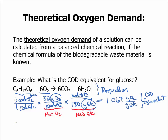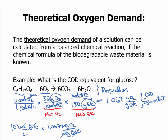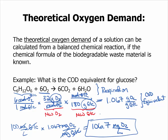This is useful because if I told you that 100 milligrams per liter of glucose was going to be dumped into the river, you can multiply by the COD equivalent. Since it's grams of oxygen per gram of glucose, it's also milligrams of oxygen per milligram of glucose. So the units cancel, and you would know that that amount of glucose would consume 106.7 milligrams of oxygen per liter. This is the oxygen demand that would be exerted, or the DO that would be consumed by biological activity.